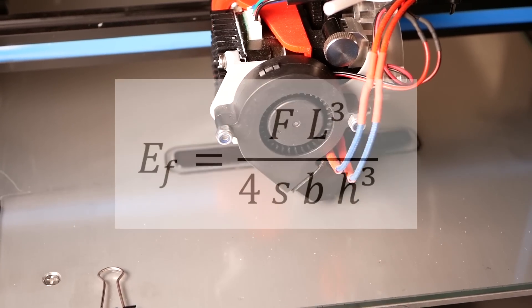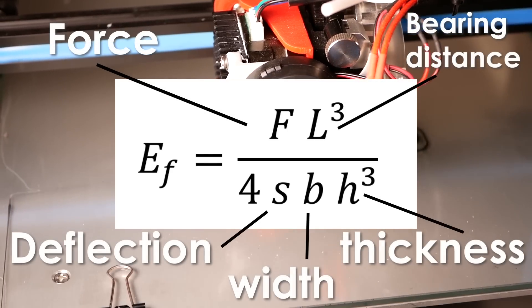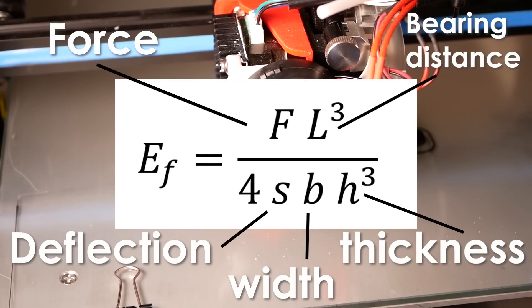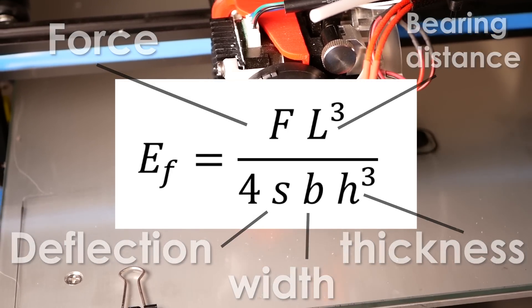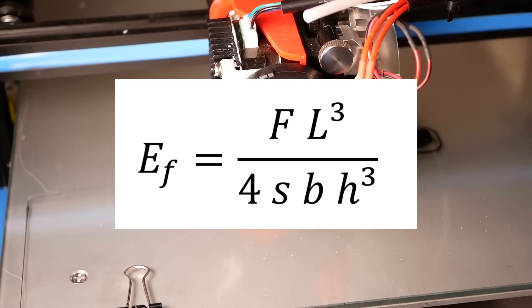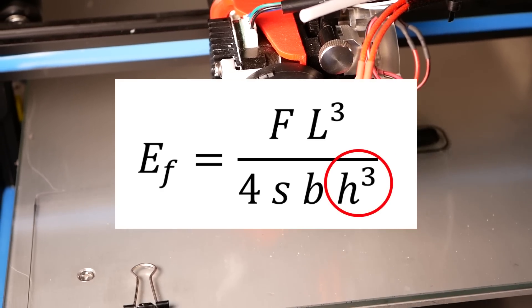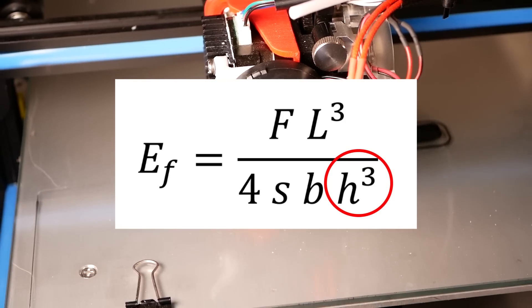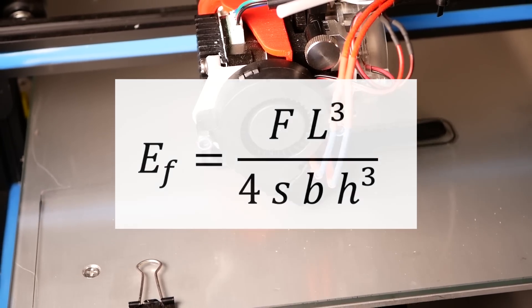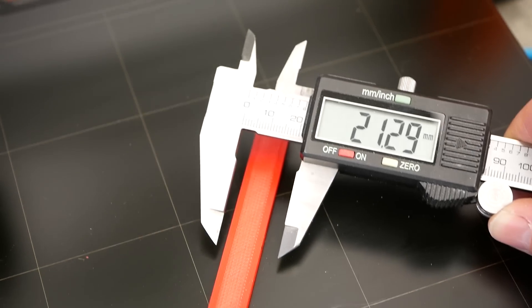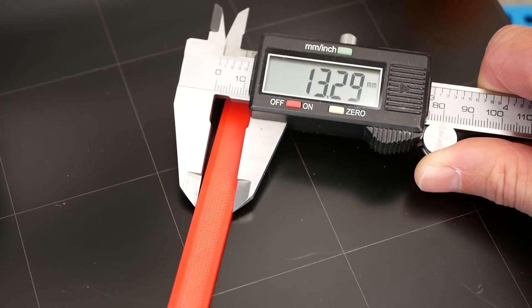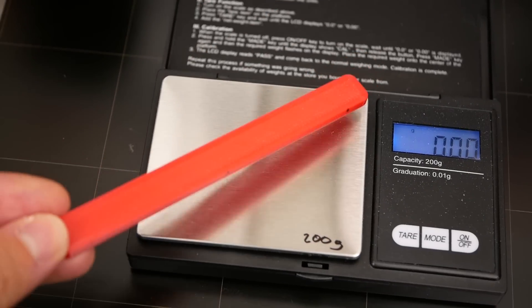If we take a look again at the formula that will be used to calculate the bending modulus, we'll see that especially the thickness is very important because it goes into the equation by a power of 3, so a small deviation from the nominal value will set off the results a lot. For this reason I documented all of the dimensions of the samples and also weighed them before the tests.